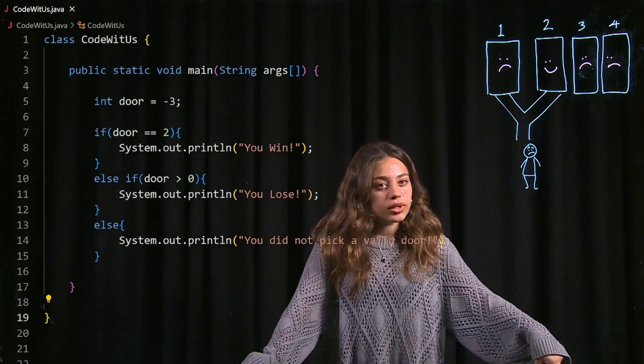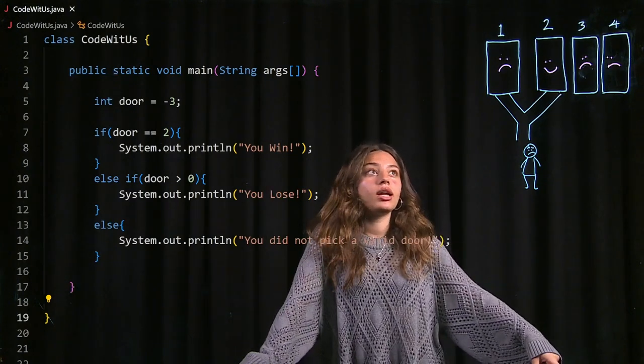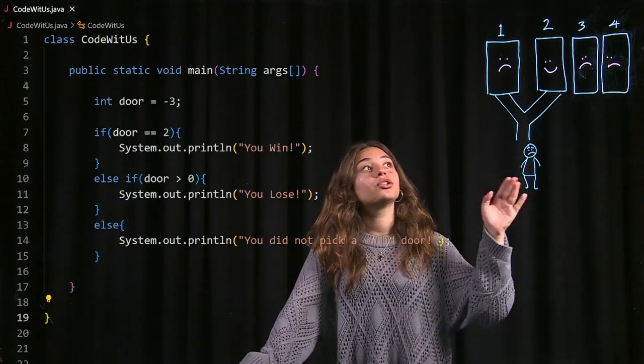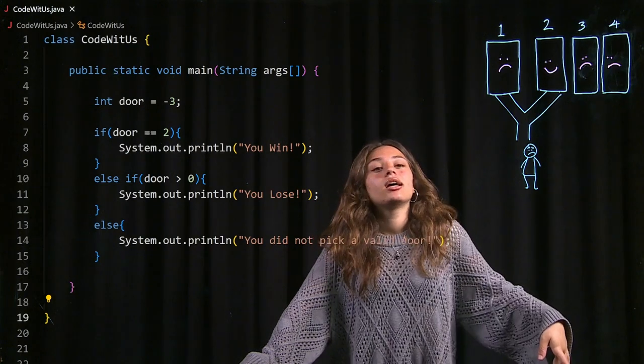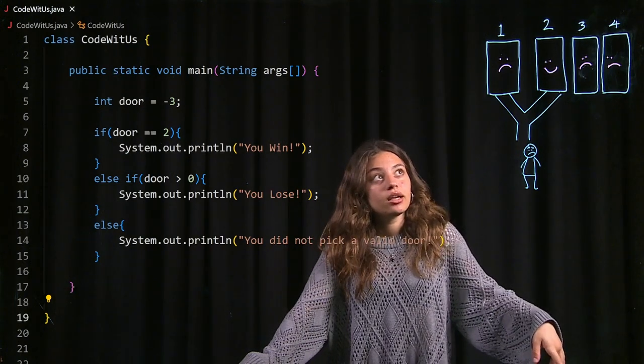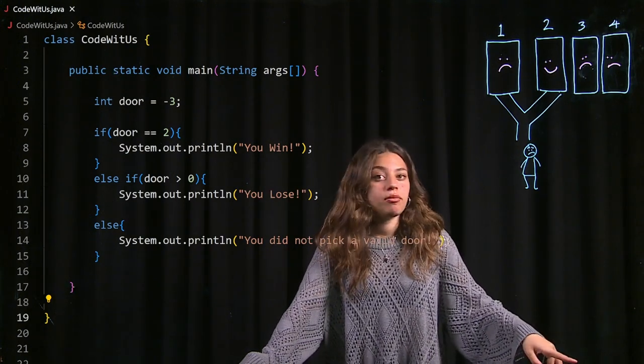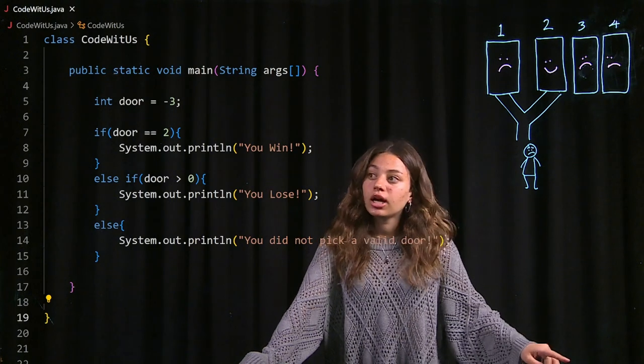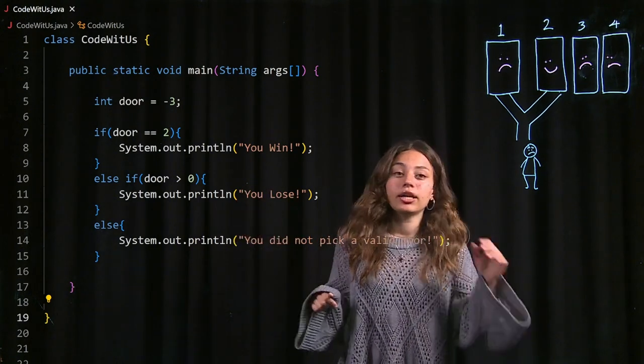So just a quick recap, in the last video I coded out an example where there's four doors and I need to pick the second door in order to win the game and every other door is a losing door. And I have the code in front of me right here.